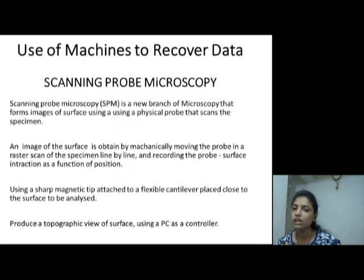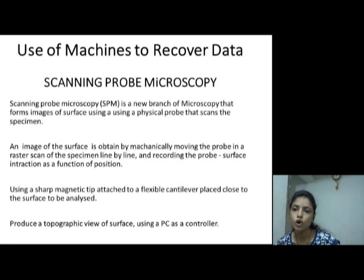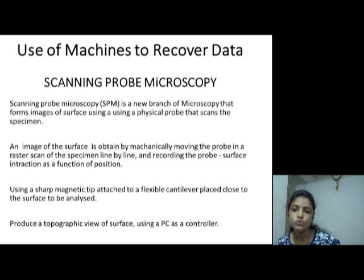Use of machine to recover data. First, scanning probe microscopy. Scanning probe microscopy is a new branch of microscopy that produces images of surfaces using a physical probe that scans the specimen. An image of the surface is obtained by mechanically moving the probe in a raster scan of the specimen line by line and recording the probe-surface interaction as a function of position. Using a sharp magnetic tip attached to a flexible cantilever placed close to the surface to be analyzed, it produces a topographic view of the surface using a PC as a controller.